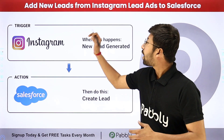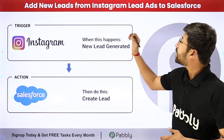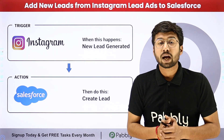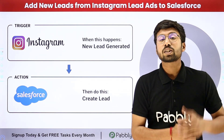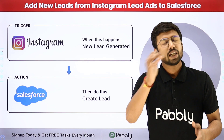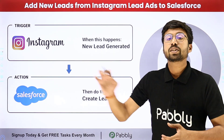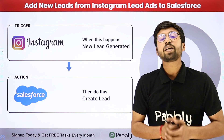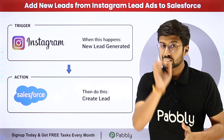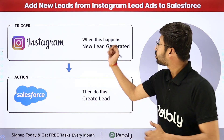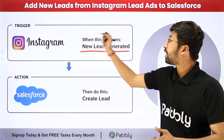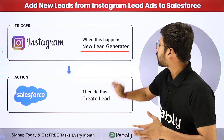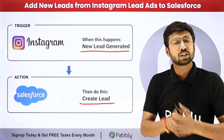In this video, we are going to learn how to add new leads from Instagram lead ads to Salesforce. Let's say you're running some ads on Instagram and using those ads, you are generating some new leads. Now you want to add these leads into your Salesforce CRM so that you can continue with the next process. Using this automation, whenever a new lead is generated in Instagram lead ads, automatically with the same details, we are going to add this lead in our Salesforce CRM.